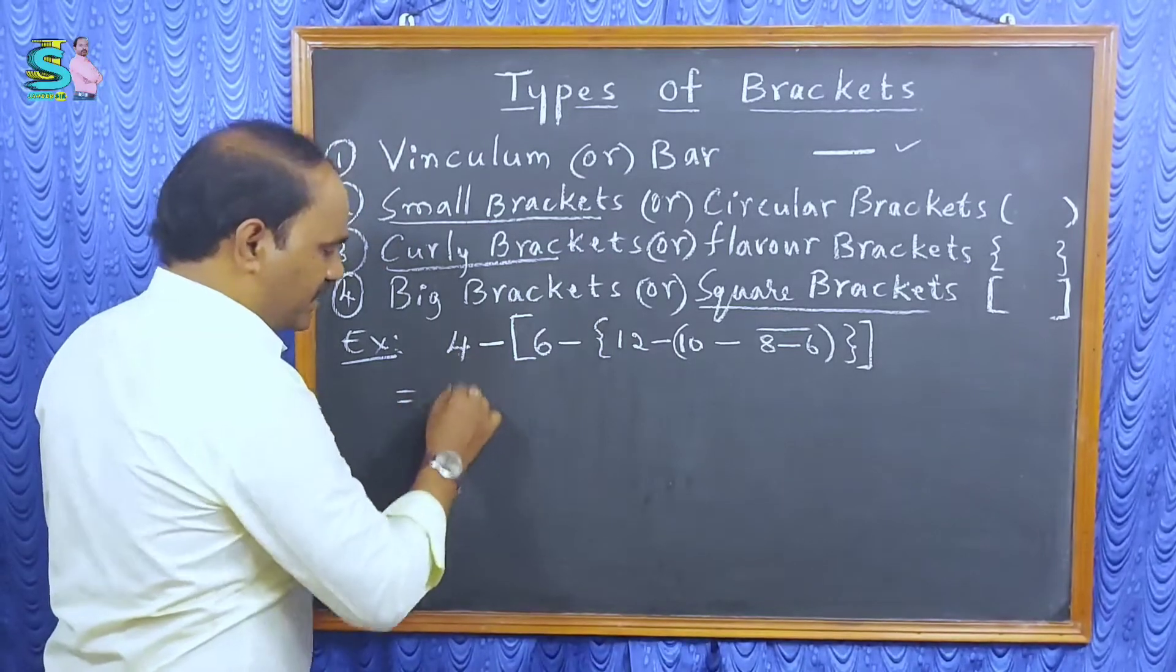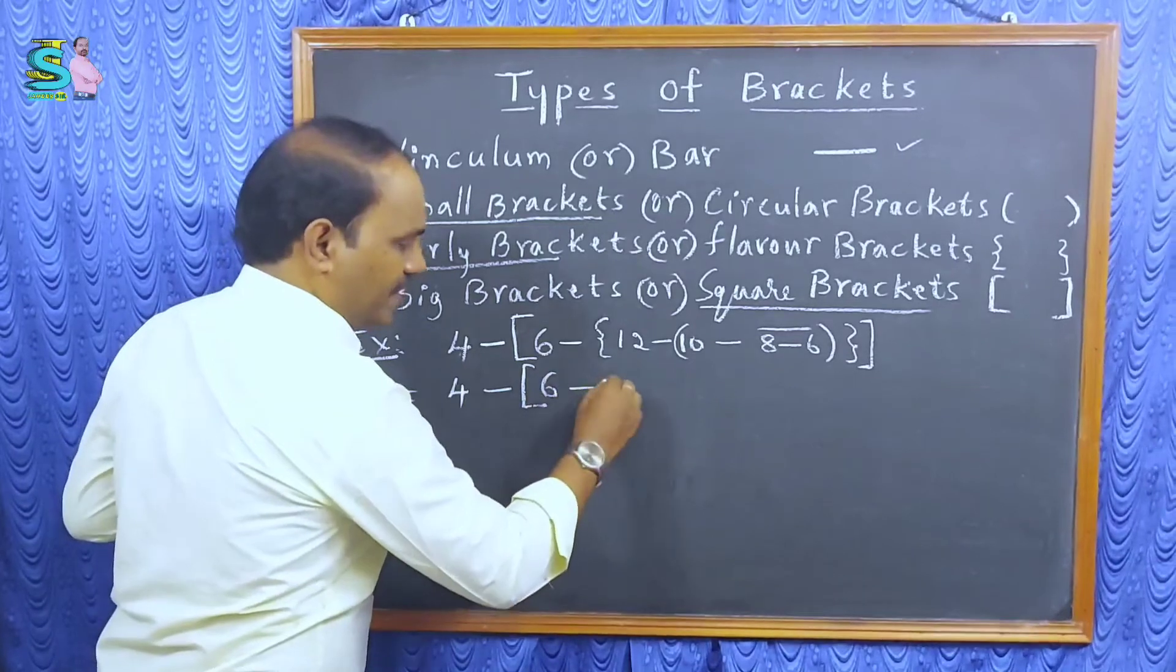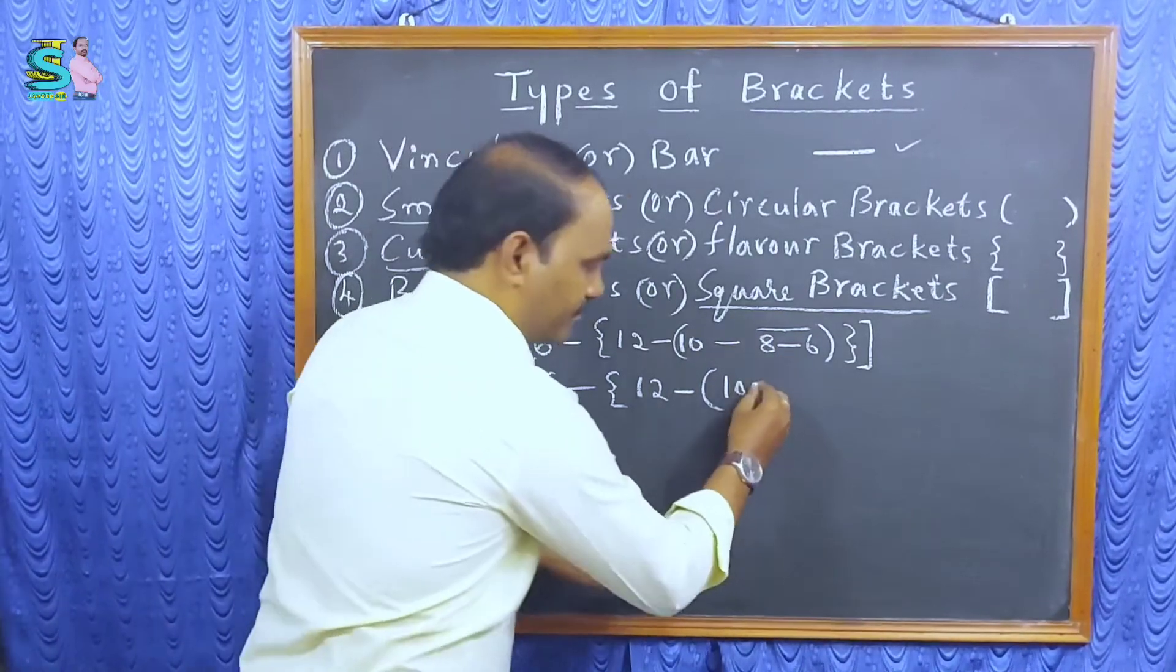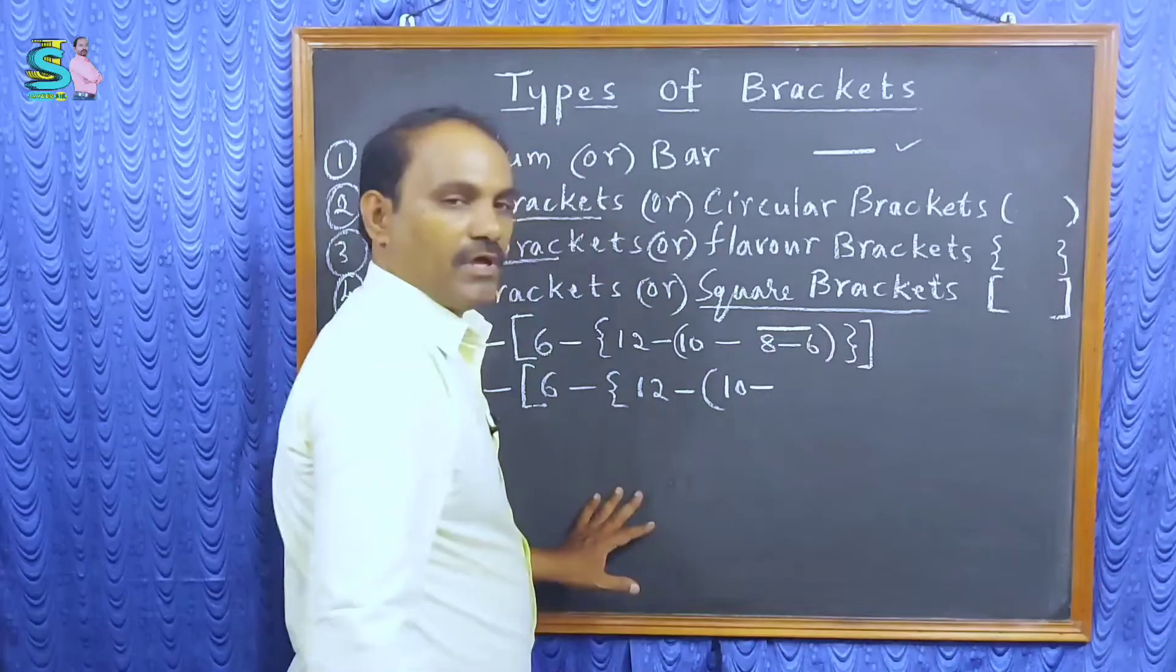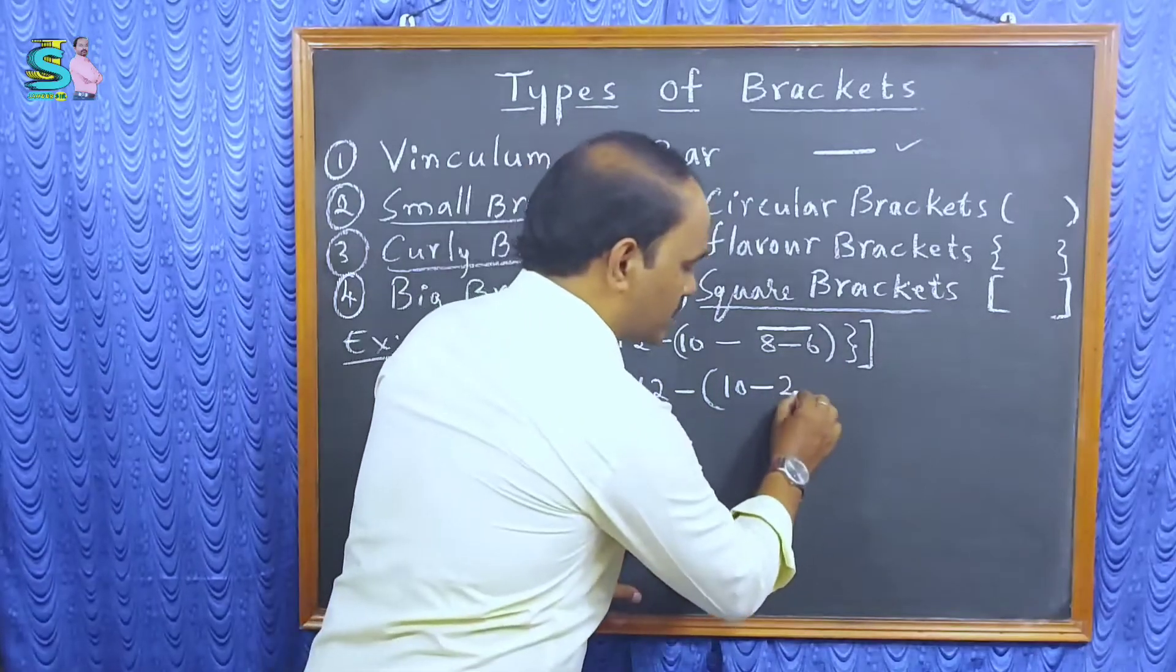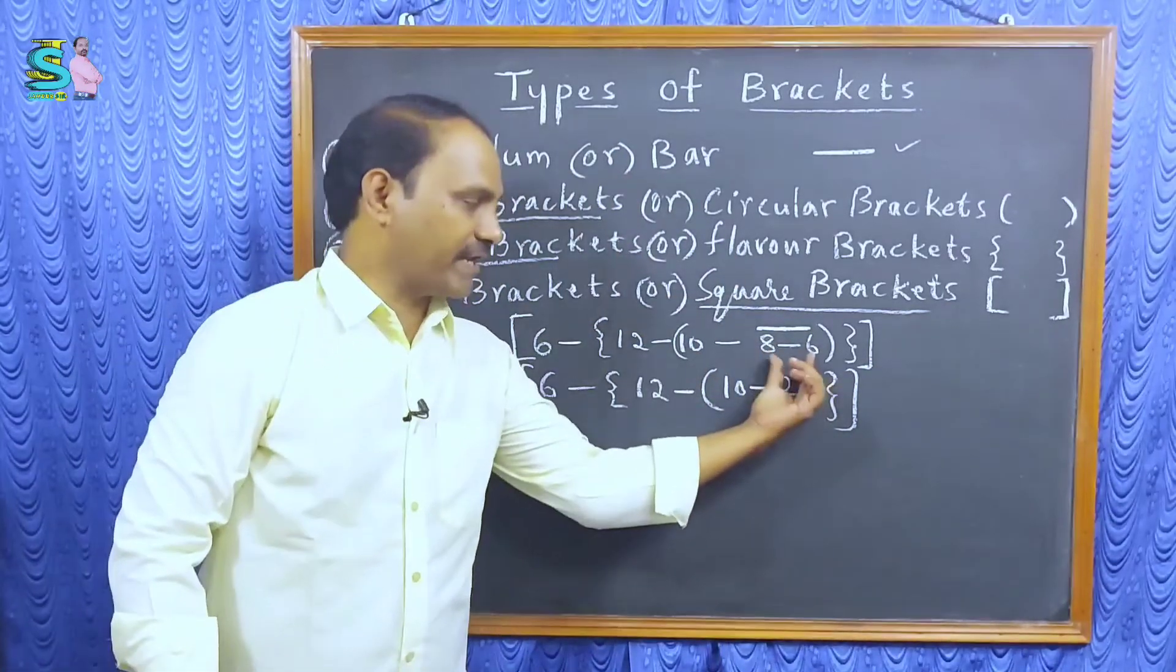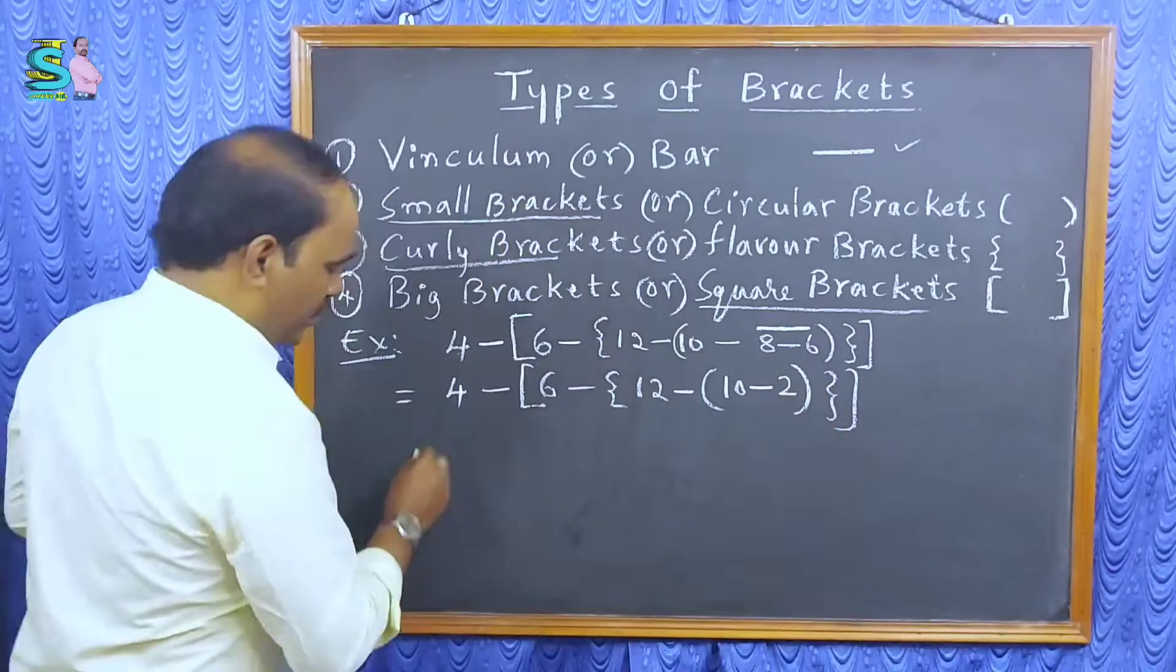Now, what is the next step? 4 minus, 6 minus, 12 minus, 10 minus. What is the value of 8 minus 6? It is 2. So, you can remove the vinculum bracket. Calculation is over. 8 minus 6 is 2. No need to write bracket again. Remove that one. Next step.